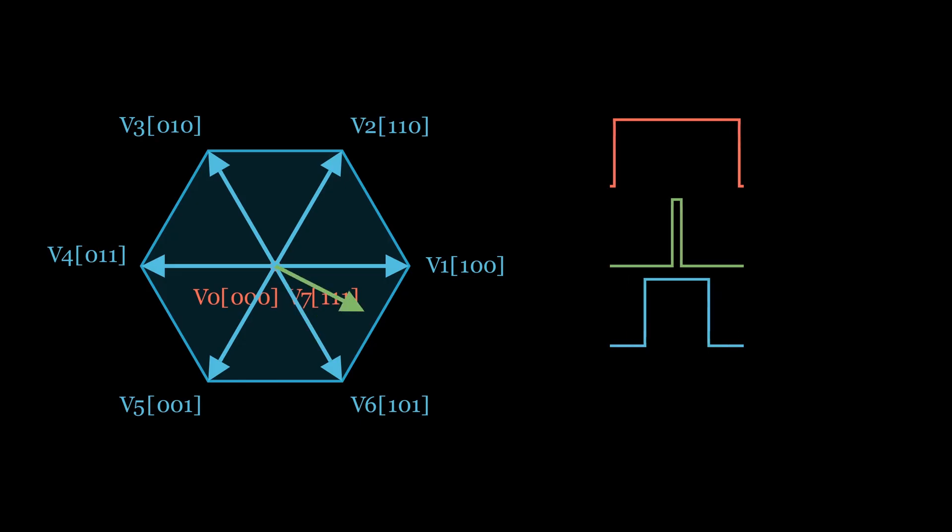For example, in this position, the output vector is between V1 and V2, but closer to V1. If we arrange the switching sequence from left to right, we get the following pattern.